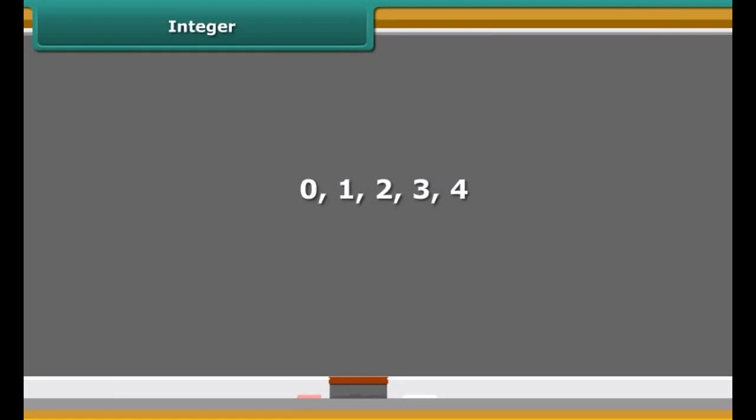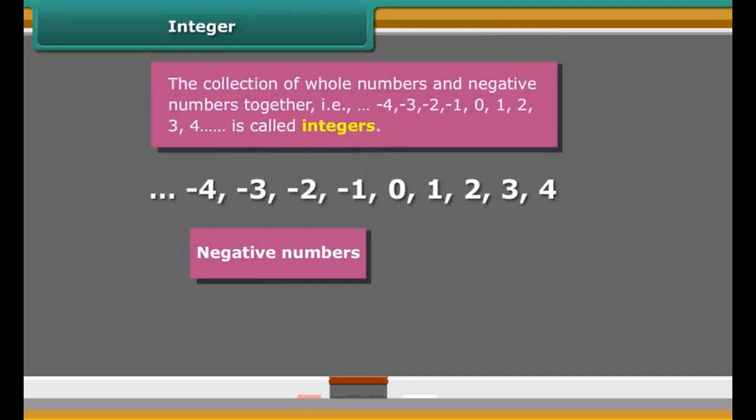You already know about natural numbers and whole numbers. If we put negative numbers and whole numbers together, the collection of numbers is known as integers.